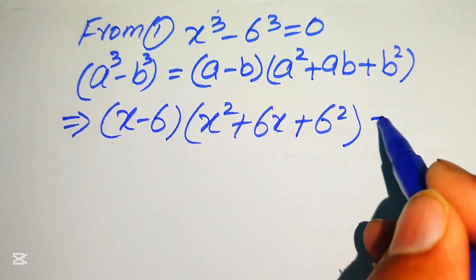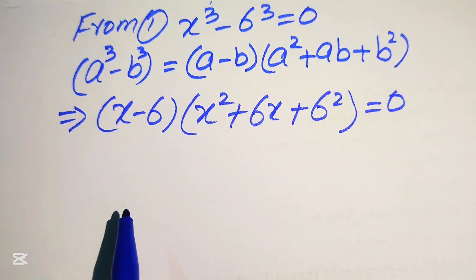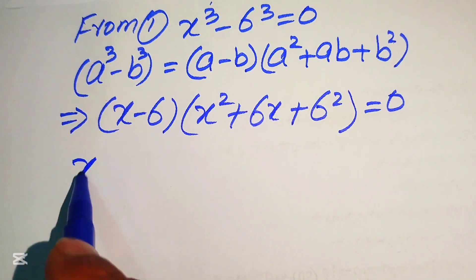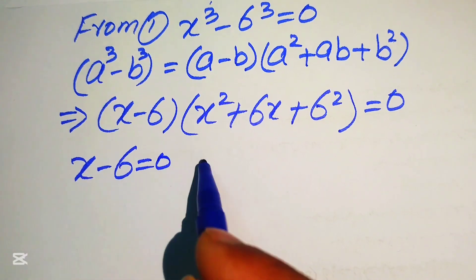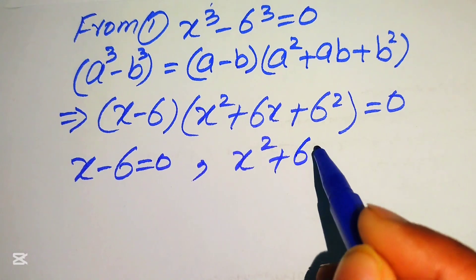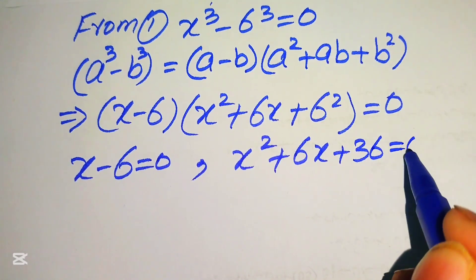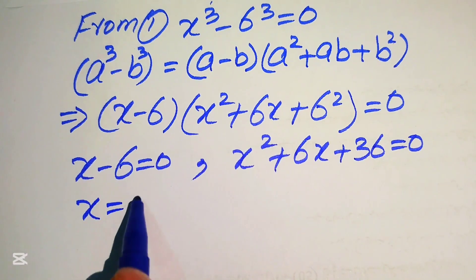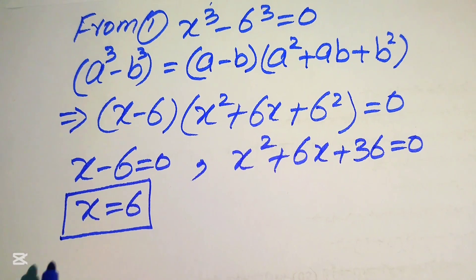We expand 6² = 36, giving (x − 6)(x² + 6x + 36) = 0. We divide into two cases: x − 6 = 0 gives x = 6, and x² + 6x + 36 = 0 is a quadratic to solve.